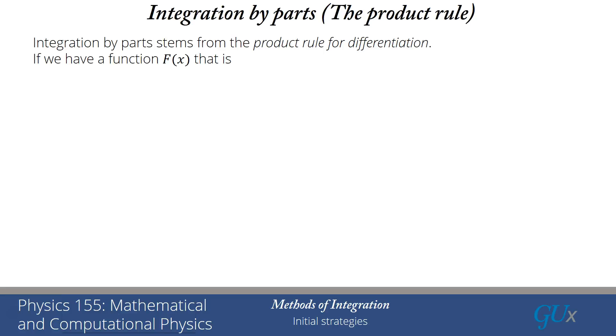The product rule starts with a function F(x) that can be expressed as the product of two functions, u(x) and v(x). And the question is, what is the derivative of F?